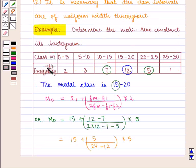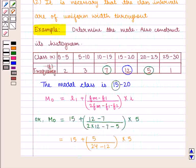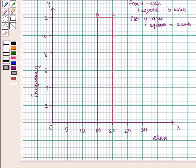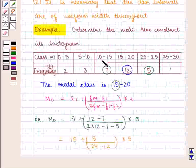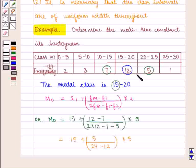Now we shall construct the histogram for the same distribution. To draw the histogram we take class along the x-axis and frequency along the y-axis, with one square equal to 5 units for x-axis and one square equal to 2 units for y-axis. In the first step we shall construct three rectangles for modal, pre-modal, and post-modal class. To draw the rectangle for the modal class we have the class interval 15 to 20 with frequency 12. This is the rectangle of the modal class. For pre-modal class we have the class interval 10 to 15 with corresponding frequency 7. This is the rectangle for the pre-modal class. For post-modal class we have the class interval 20 to 25 with frequency 5. This is the rectangle for the post-modal class.